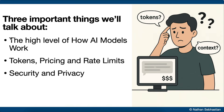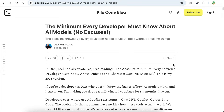There are three core ideas that we will talk about here. The first is the high level of how AI models work, followed by tokens, pricing, and rate limits, before finally discussing security and privacy.